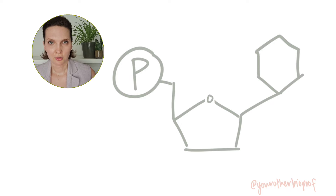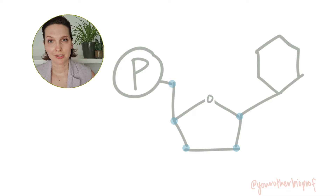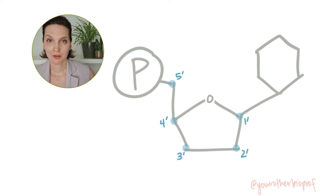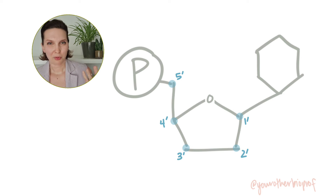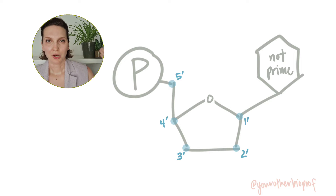The sugars in our nucleotides have five carbons, and we can keep track of the carbons by numbering them: one prime, two prime, three prime, four prime, five prime. Why the prime? Well, that's because we also number the carbons in the nitrogenous base, and by adding a prime it helps keep things separate.